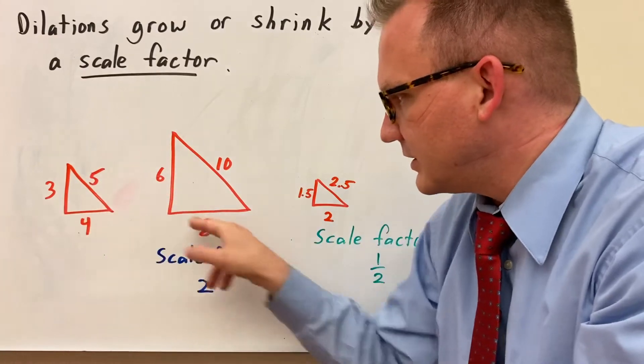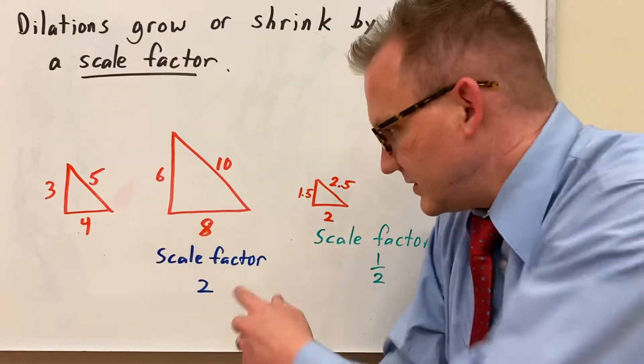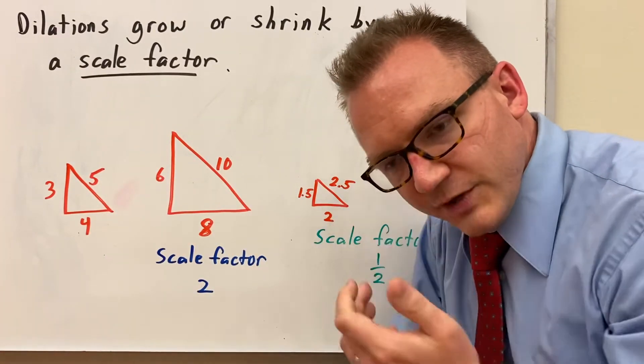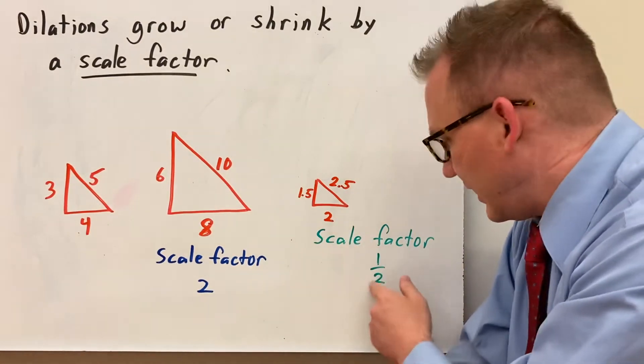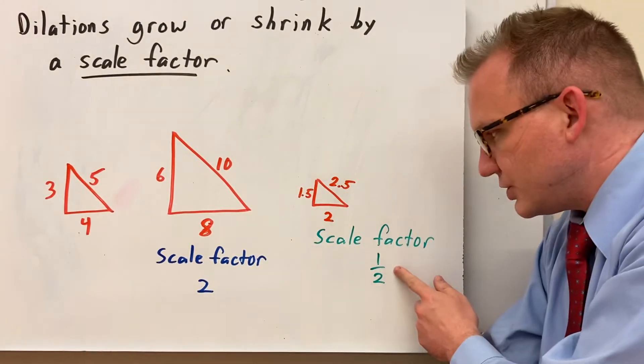So I have the same 3 to 6, 4 to 8, 5 to 10. You have a scale factor of 2 there with all the sides. Or you might shrink it by having a scale factor that's a fraction such as 1 half.